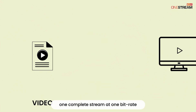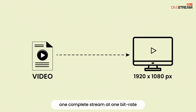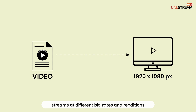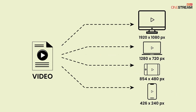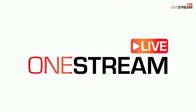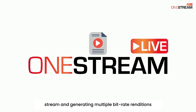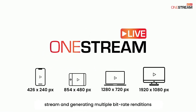Rather than creating one complete stream at one bitrate, you create multiple streams at different bitrates and renditions. One Stream Live does this by taking in the original stream and generating multiple bitrate renditions optimized for different bandwidths.